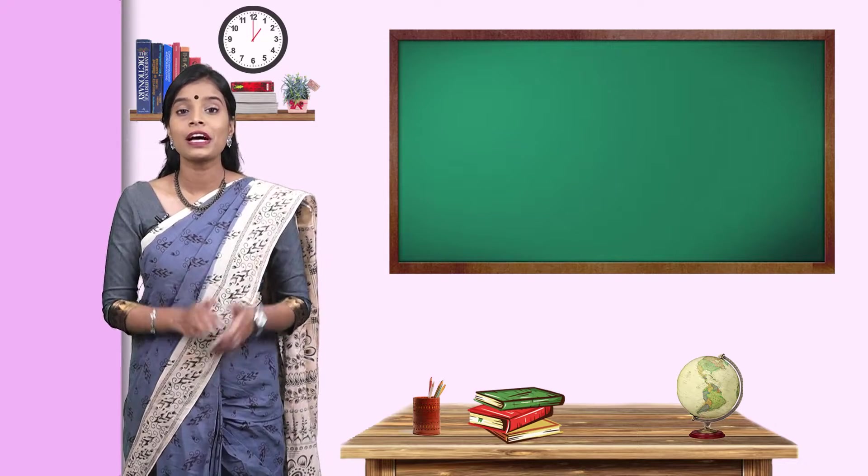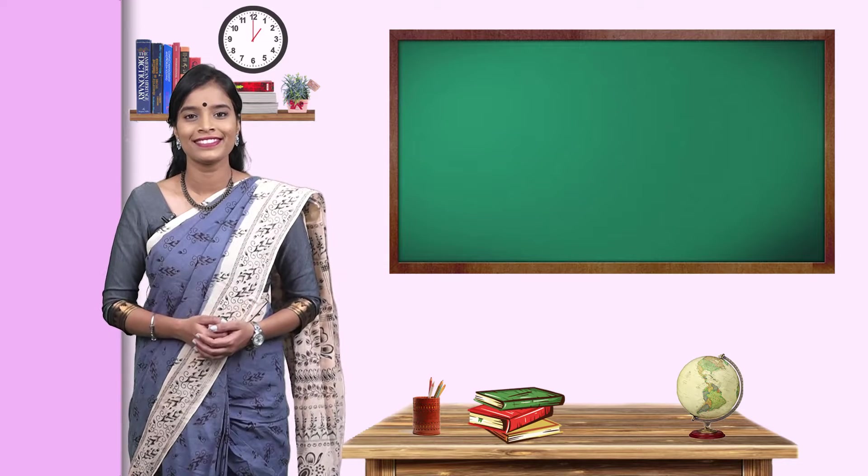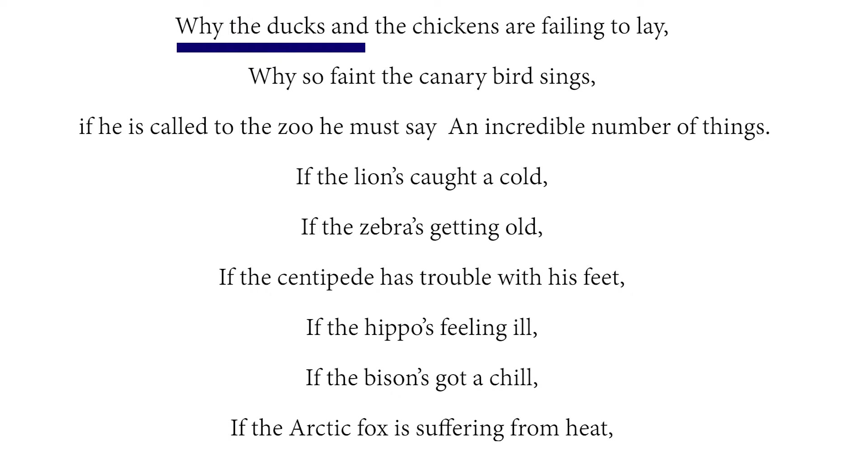Just like that, the poet also talks about different problems of different animals. Why the ducks and the chickens are failing to lay? Why so faint the canary bird sings? If he is called to the zoo, he must say an incredible number of things. If the lions caught a cold, if the zebras getting old, if the centipede has trouble with his feet, if the hippos feeling ill, if the bisons got a chill, if the arctic fox is suffering from heat.